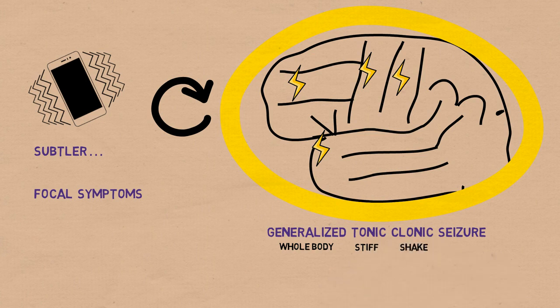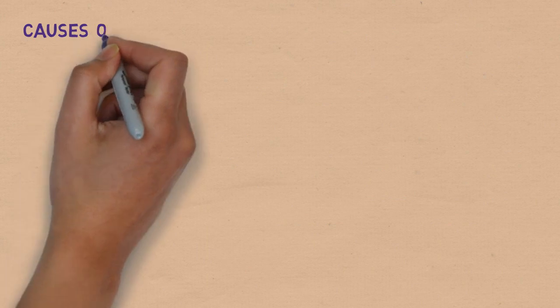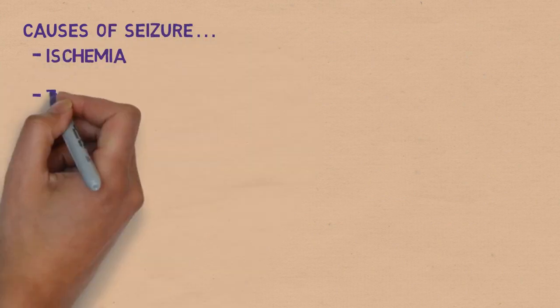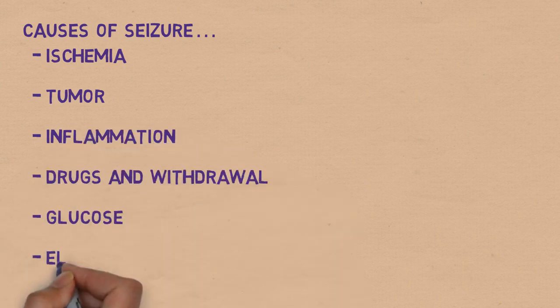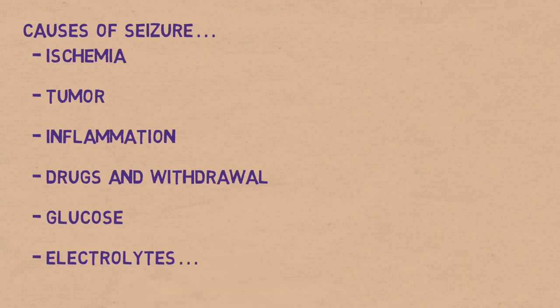There are many different things that can cause the brain to start a seizure, such as ischemia, irritation from a tumor, inflammation from infection or autoimmune conditions, usage of drugs or even withdrawal from drugs, hypoglycemia, and electrolyte imbalances.